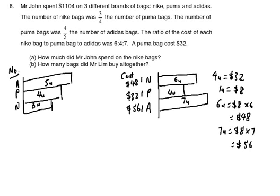Now we know that the number of bags are: for every five Adidas bags, he bought four Puma bags and three Nike bags. If I used 'unit' for both number and cost it would be very confusing, so I'll change the number to 'parts': five parts, four parts, and three parts. This way it's less confusing.